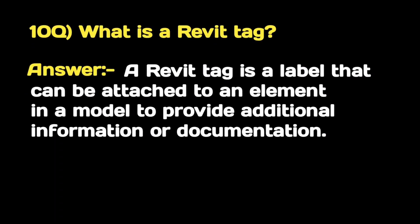What is a Revit tag? A Revit tag is a label that can be attached to an element in a model to provide additional information or documentation.